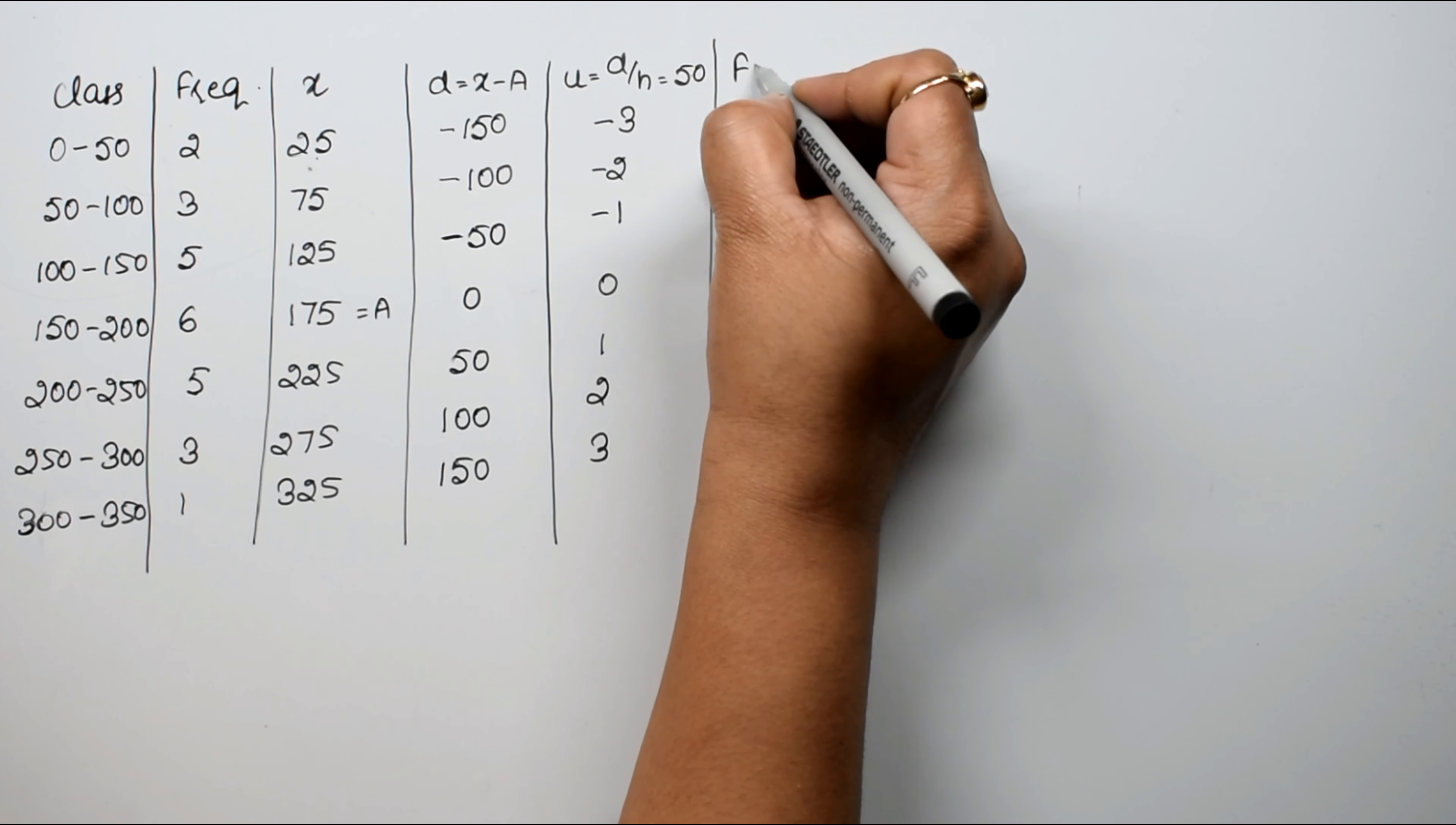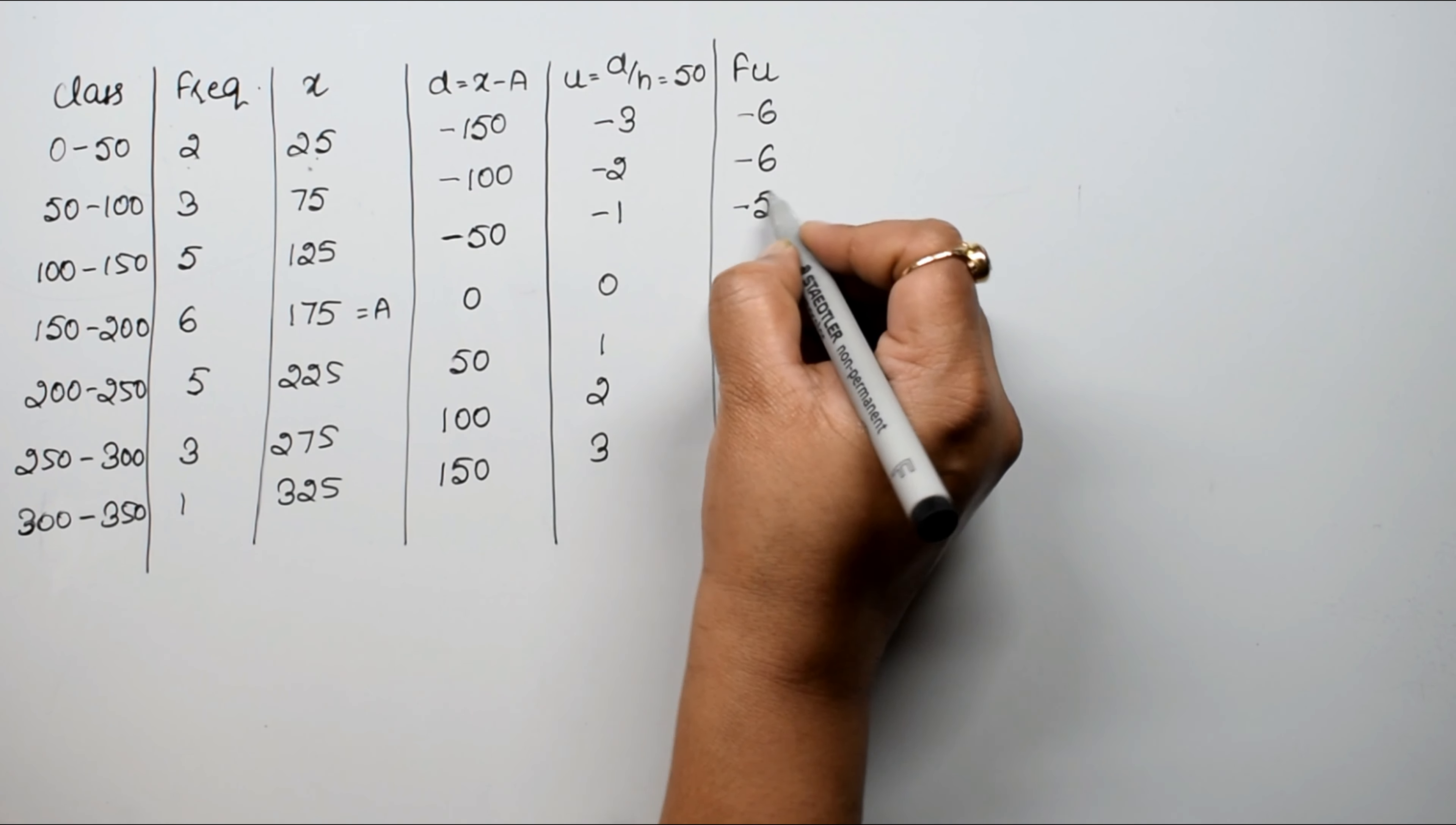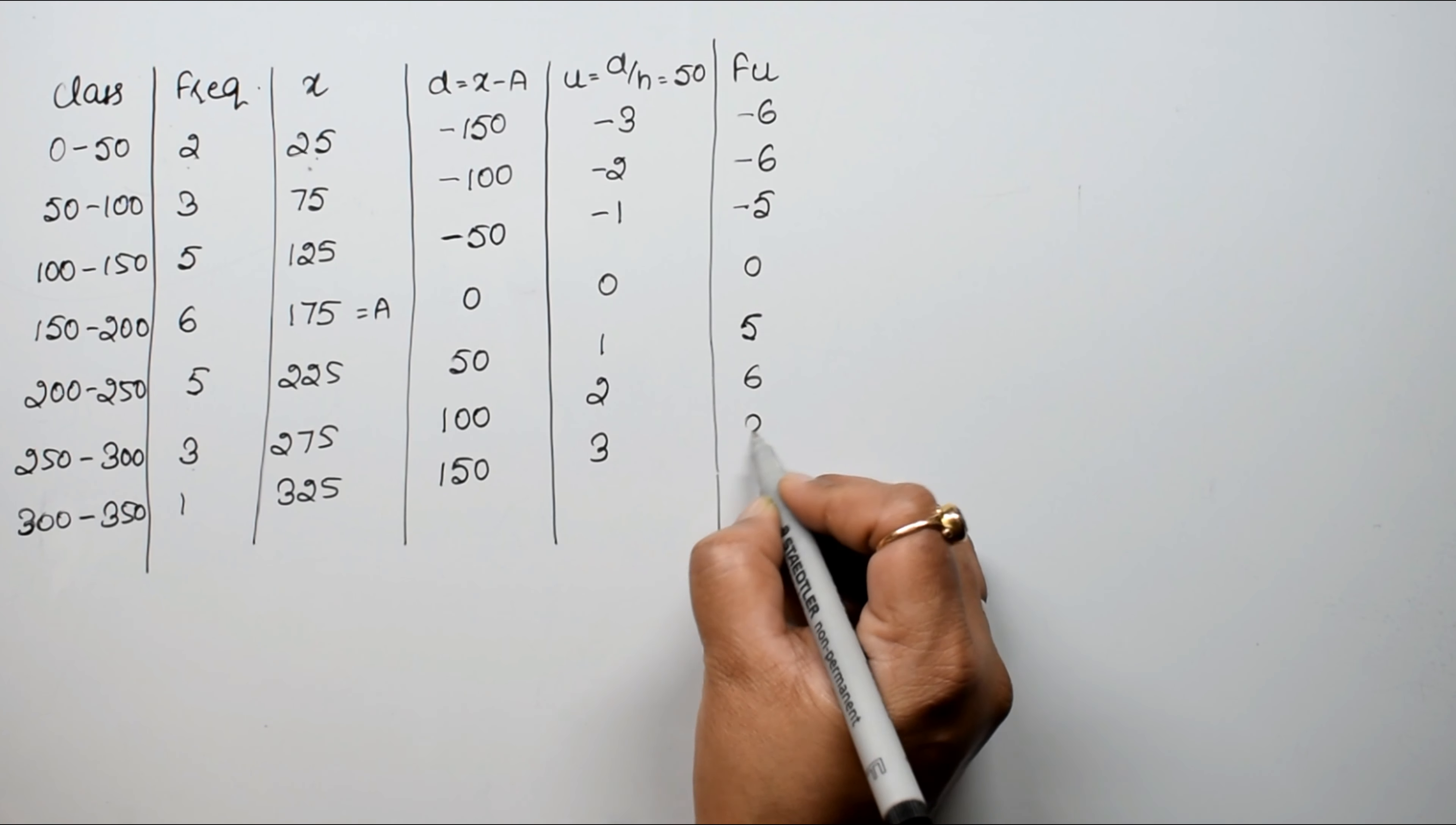Now what is our f u, f multiply u. 2 into minus 3 is minus 6. 3 into minus 2 is minus 6. 5 into minus 1 is minus 5. 6 zeros are 0. 5 ones are 5. 3 twos are 6 and 1 into 3 is 3, right?